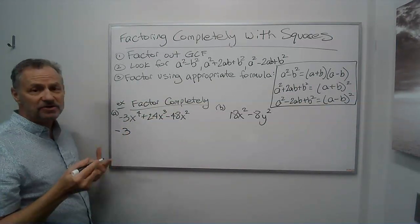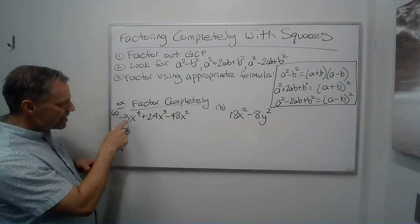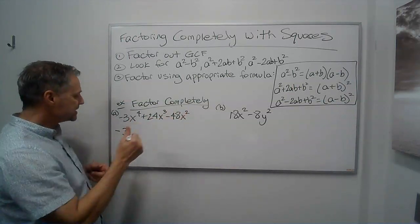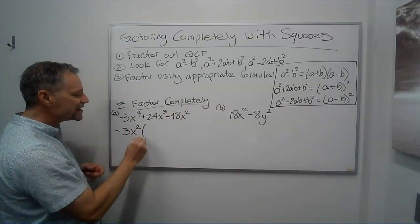If it starts with a negative, I always factor out the negative as well. And then let's see, x to the 4th, x to the 3rd, x squared, then I'll have at least an x squared, so we'll factor that out. That's my greatest common factor.